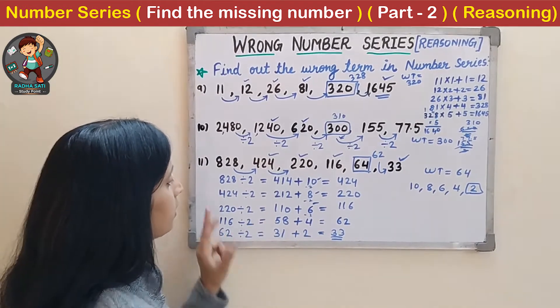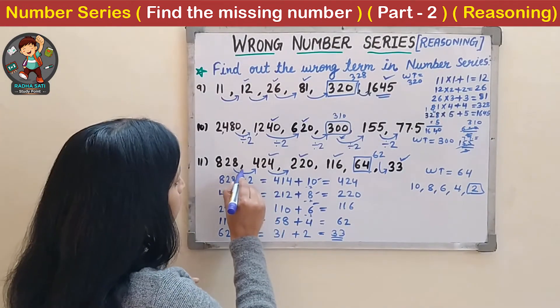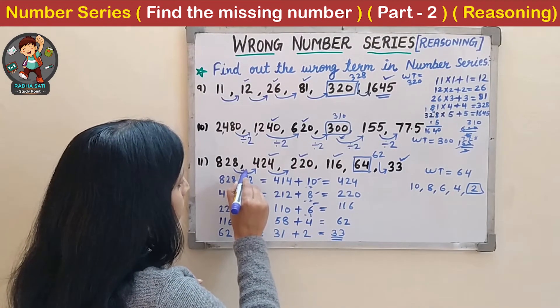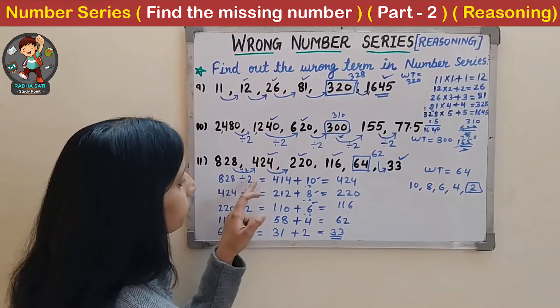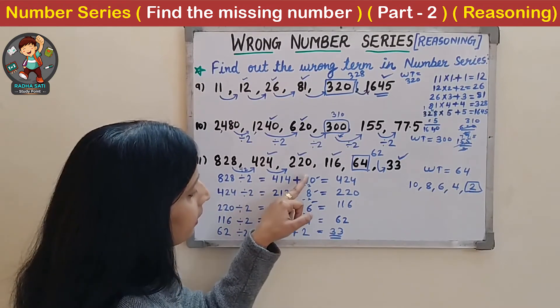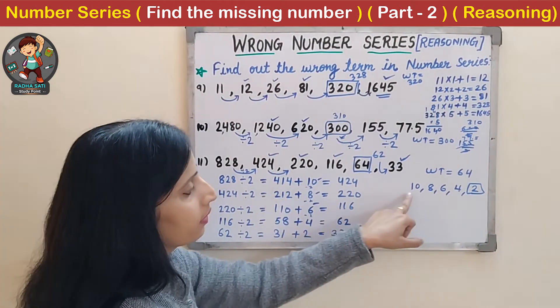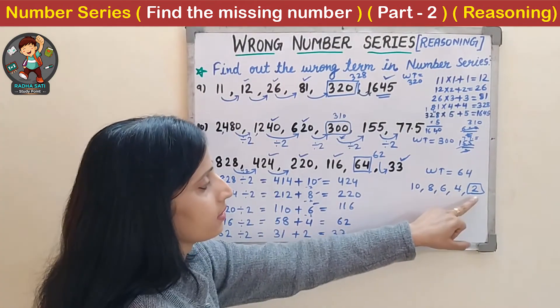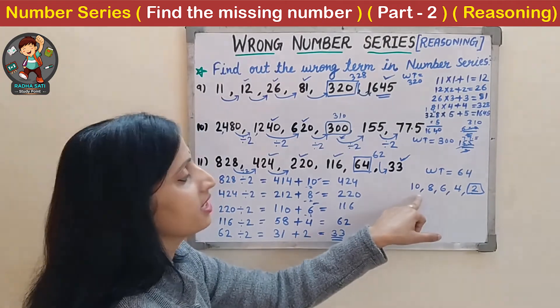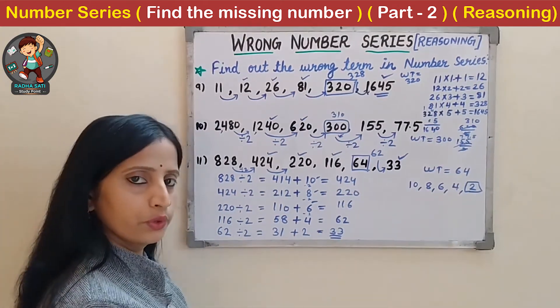The pattern is: divide by 2, then add consecutive even numbers which are decreasing by 2 each time: 10, 8, 6, 4, 2.